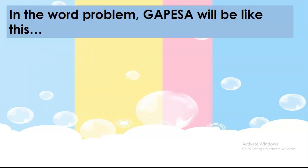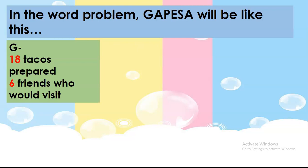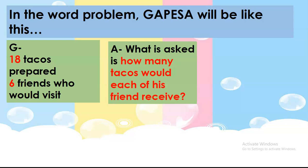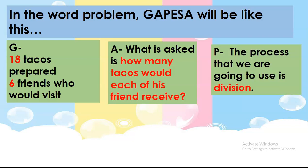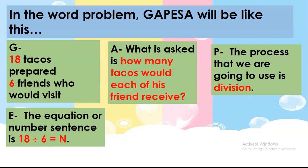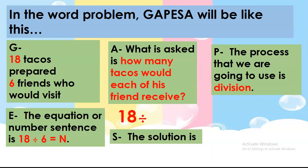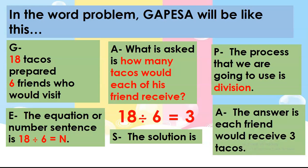Now in the word problem, GAPESA will be like this. For letter G, we have 18 tacos prepared and 6 friends who would visit. Letter A, what is asked: how many tacos would each of his friends receive? For letter P, the process we're going to use is division. For letter E, the equation is 18 divided by 6 equals N. The solution is 18 divided by 6 equals 3. So the answer is: each friend would receive 3 tacos.